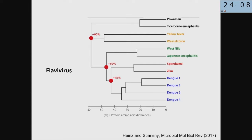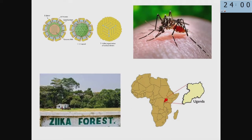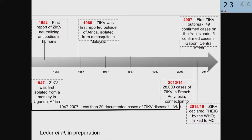Zika virus is a flavivirus — from the same family, for example, as the dengue virus, which is unfortunately also very common in Brazil. It is an RNA-based virus transmitted by a mosquito, and it was first described in Uganda, Africa, in a forest called Zika — which is why the virus carries that name. It's important to highlight that between 1947, when the virus was discovered, and 2007 — 60 years — only 14 cases were described of people getting infected with Zika.